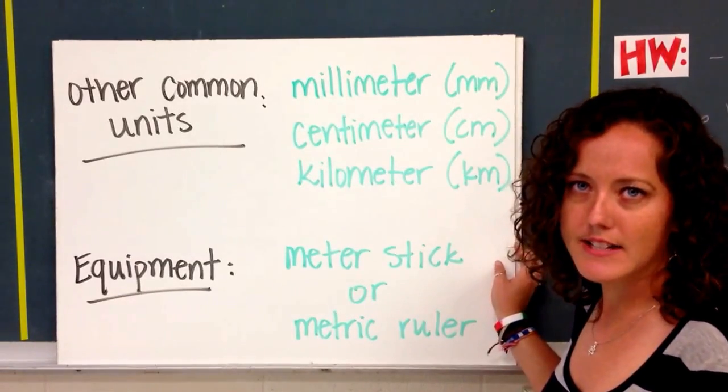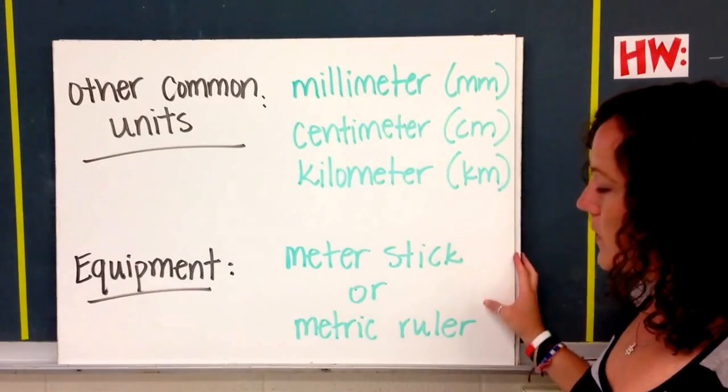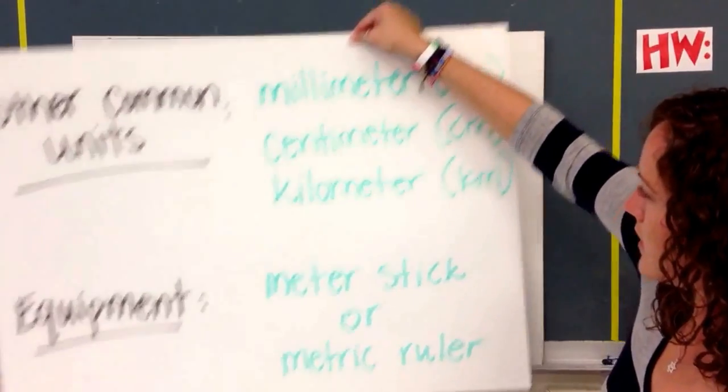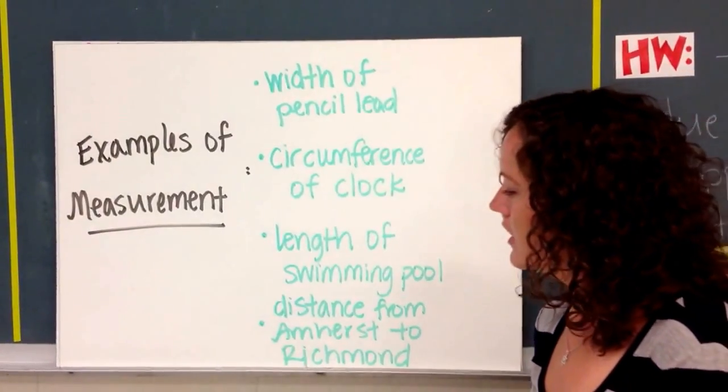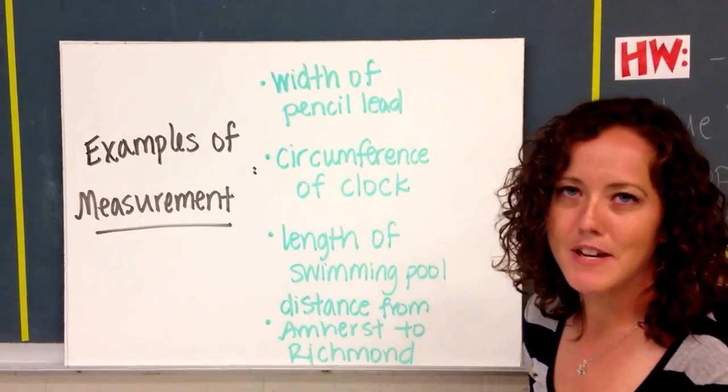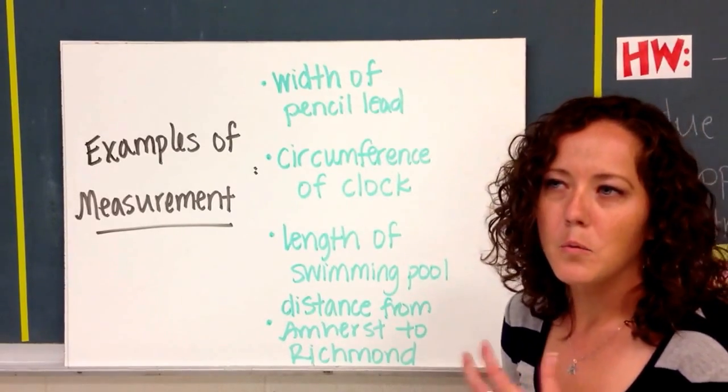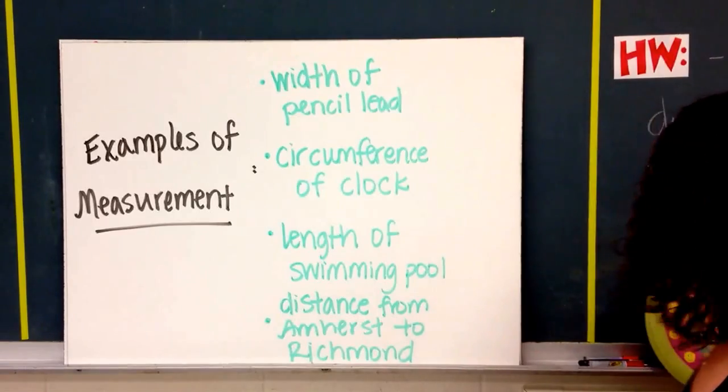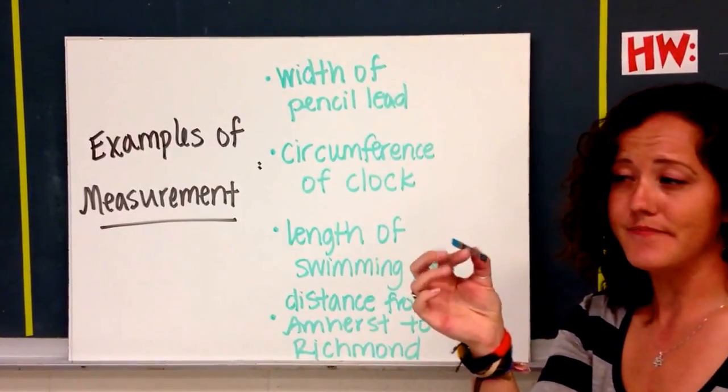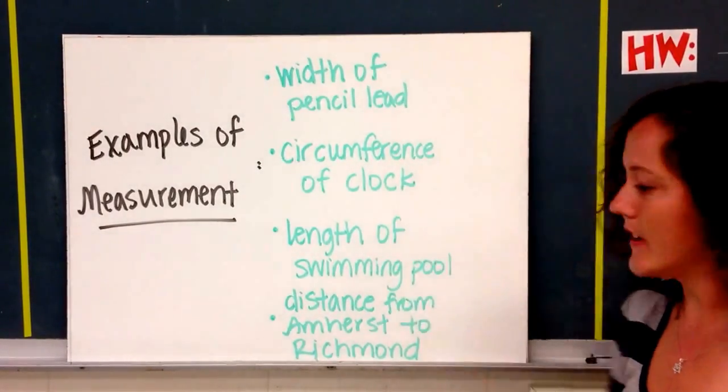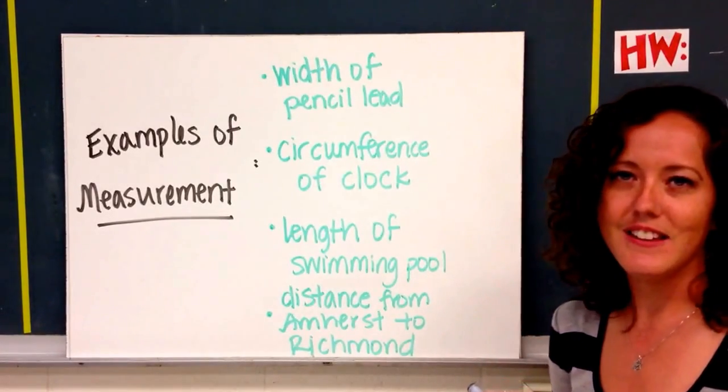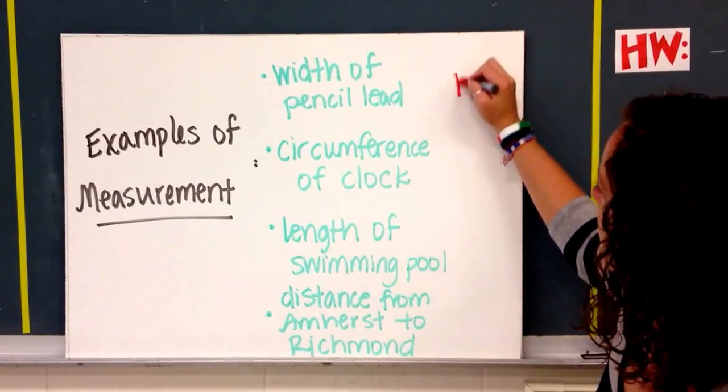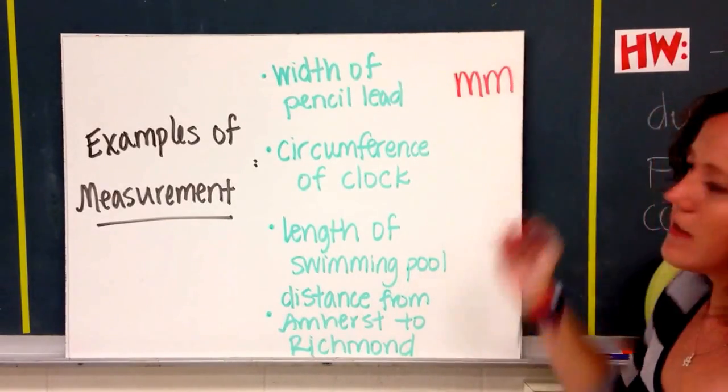Equipment that we'll be using in class to measure length are the meter stick or a metric ruler. So let's talk about some examples of things that we might measure and figure out what unit of length we would use. Our first example is the width of pencil lead. So pencil lead is very, very small. Okay, this is just a container of it. So what do you think our measurement would be? It should be mm, which stands for millimeter.